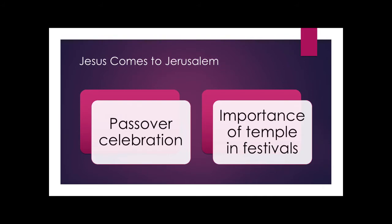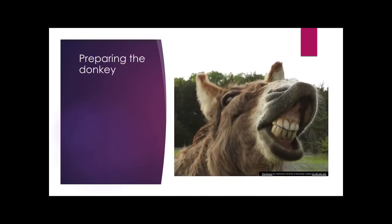If you remember, they're coming from Galilee, which is farther in the north and would have had to travel quite a while to get there. So the first thing that happens in the story is that Jesus sends his disciples to prepare the donkey. Here's a lovely picture of a donkey for you to look at. So let's read these verses and think about what's happening here. This is Matthew 21, starting in verse 1.